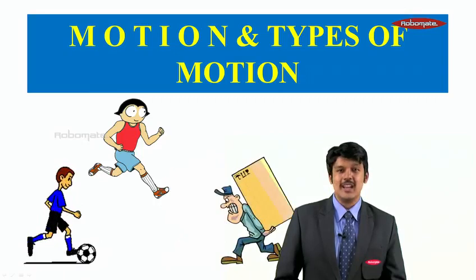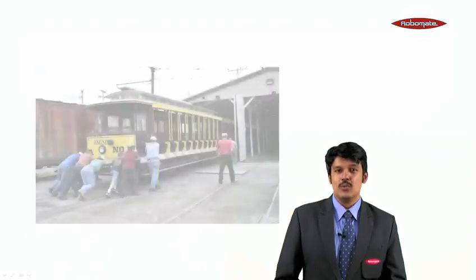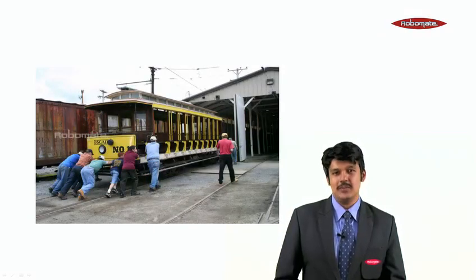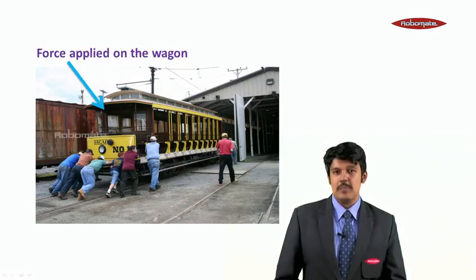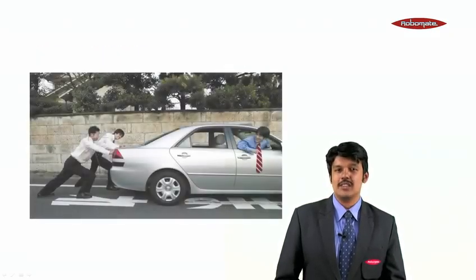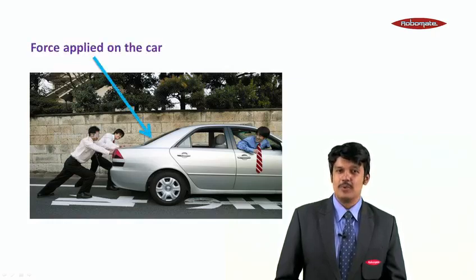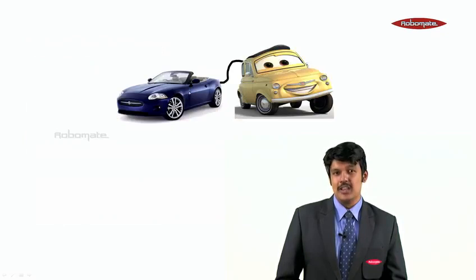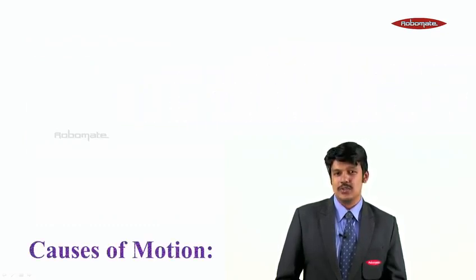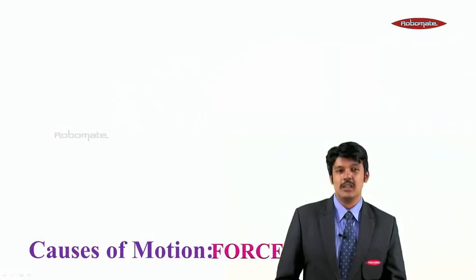Having understood what is motion, let us understand what causes motion. Suppose there is a train that is not moving, and there are a lot of people who are applying some force to move the train. So when the people are applying force, the wagon moves. Similarly, a car has halted; there are people who are pushing the car, and when the people are pushing the car, a force is applied on the car. So the cause of motion is nothing else but force.